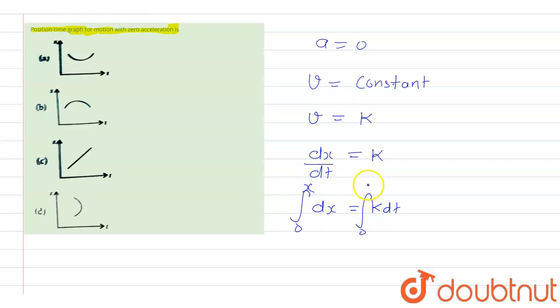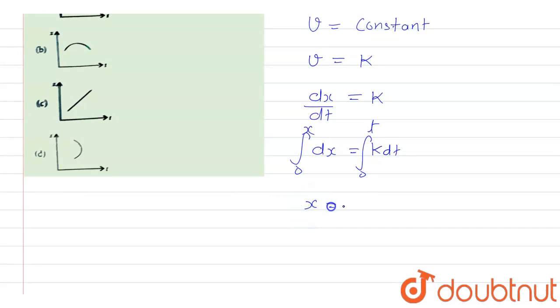Then we get the equation of x is equal to k t. And with this we can say that x is directly proportional to t.